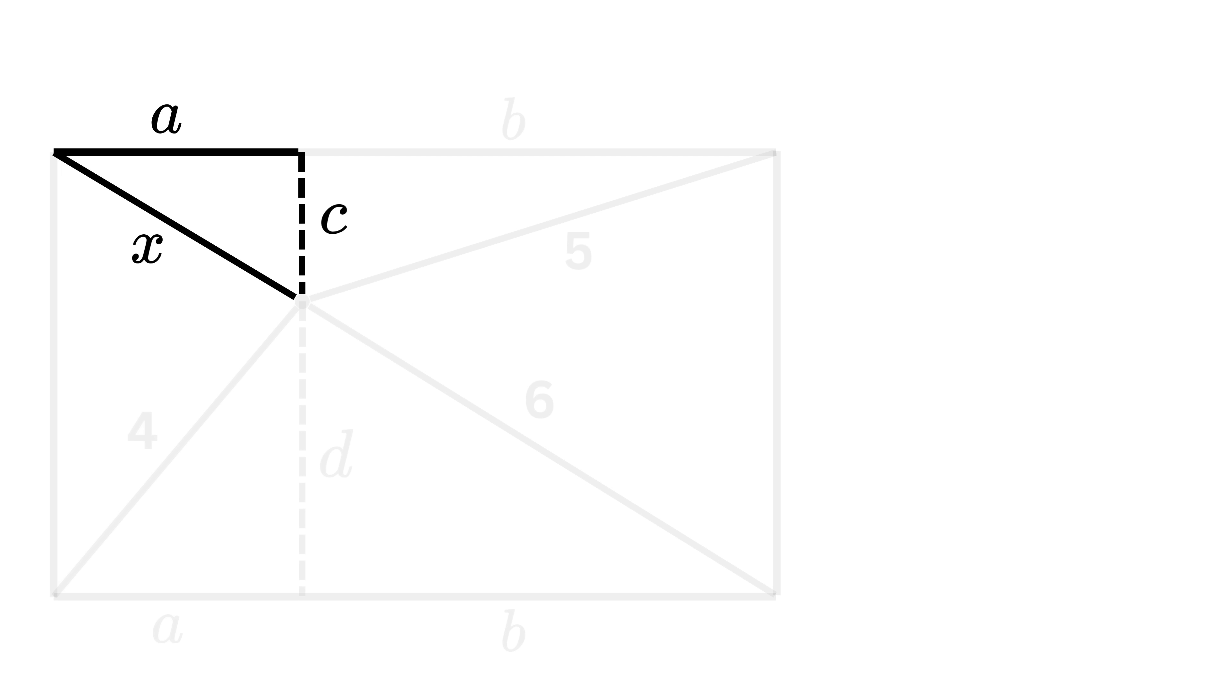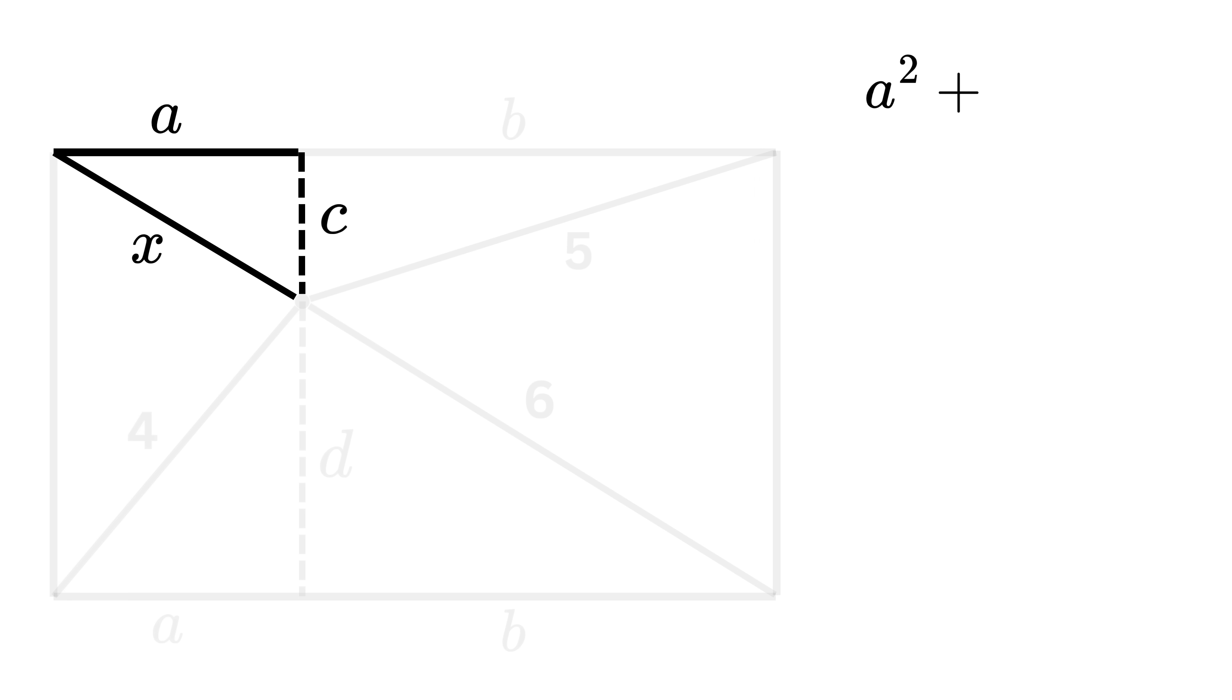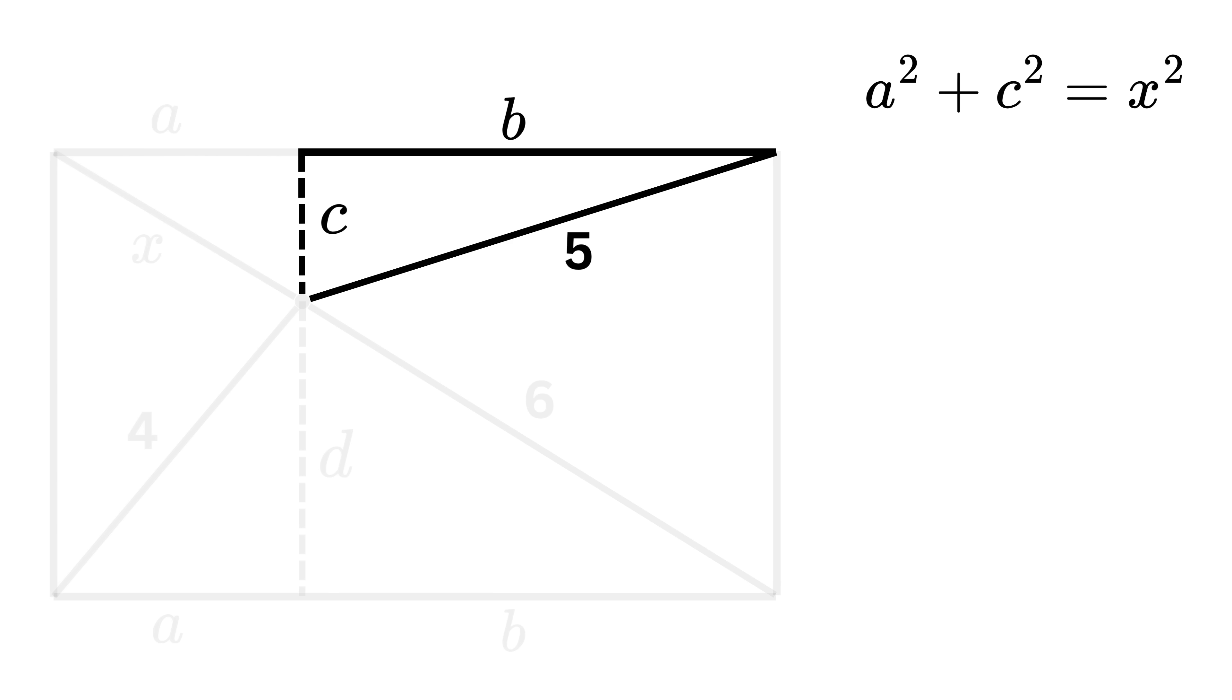First, consider this top left right triangle. Here, the two sides are A and C, and the hypotenuse is X. So, using our favorite right triangle theorem, we write A square plus C square is equal to X square. Let me know in the comments, what is the name of this classic theorem?